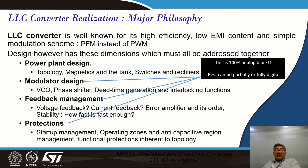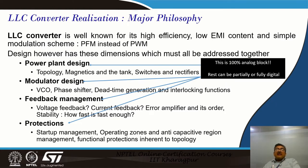We must pay significant attention to the modulator design. The modulator can be either analog or digital. It contains the VCO — the voltage controlled oscillator — which generates the square wave pulses; the VCO gets its information from the output voltage sampler and an amplifier. Then we have the phase shifter, which generates 180 degree phase shifted outputs for driving the two arms of the LLC converter. We also have dead time generation — dead time is very important for ensuring high efficiency and zero voltage switching over the entire load span. Insufficient dead time can cause loss of efficiency and sometimes even destruction of the system.